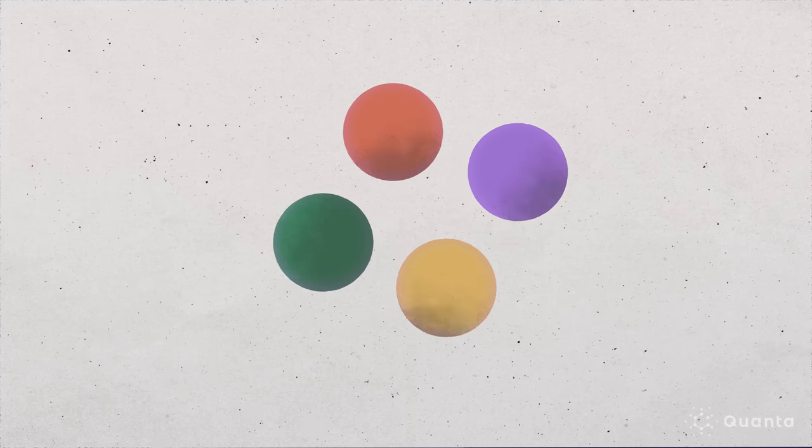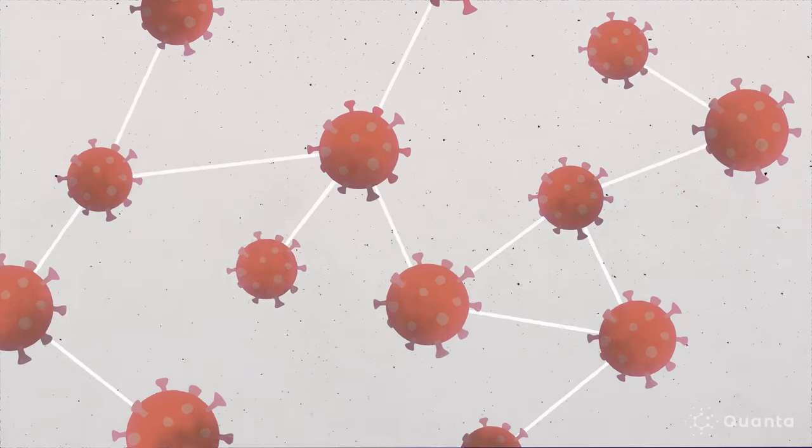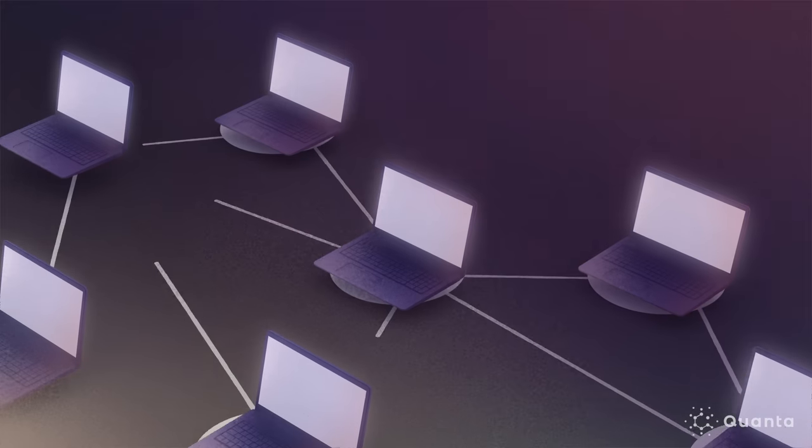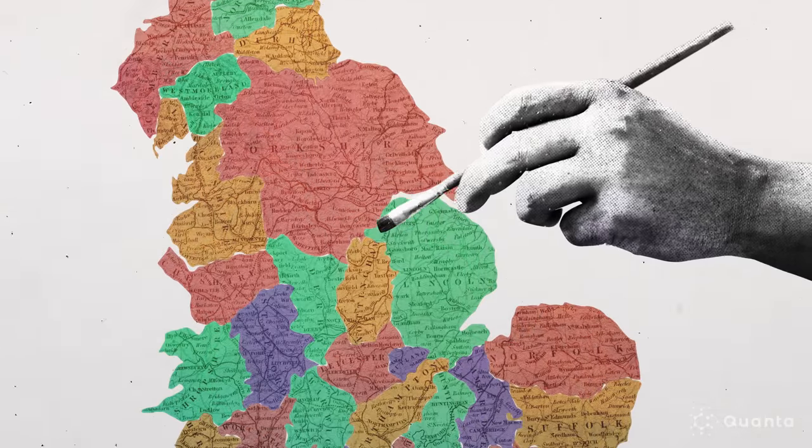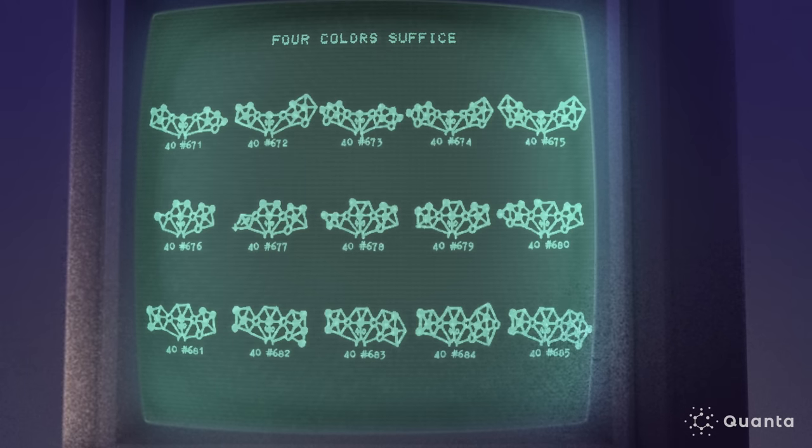This was one of the major drivers of the study of graph theory or network theory. The ideas behind these theories are now ubiquitous. We use graphs and networks to describe the way disease spreads and the way computer networks are connected. While the four-color theorem might seem like a mathematical curiosity, it really did push the boundaries of mathematics forward.